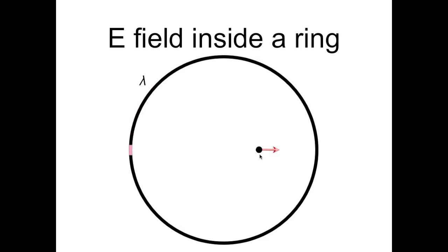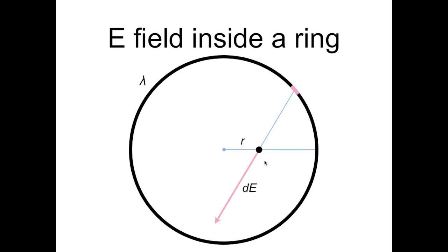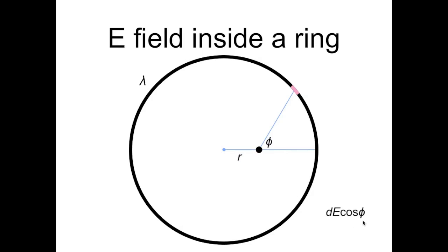Now the segment is left of the dot, so the horizontal component of the E field points to the right. But in general, the vector is shorter on this side, indicating the field is weaker, since the dot is closer to the other end of the ring. And now we're back on the right side, where the field is stronger. So we want to integrate the horizontal component of the E field as we move around the ring. Let's set up the integral. Let's suppose that we're finding the electric field a distance little r from the center of the ring. Now let's consider a small segment at an arbitrary location on the ring. This segment contributes an electric field, which we'll call dE, that points directly away from the segment. Let's call the angle between the segment, the dot, and the horizontal axis phi. So if we want to find the horizontal component of dE, we know that this angle is also phi, and we can draw in a right triangle here. So the horizontal component is dE times the cosine of phi. We'll be integrating dE cosine phi.